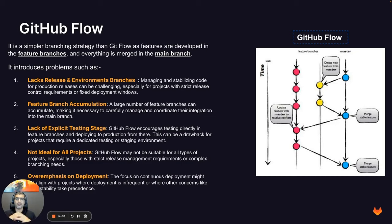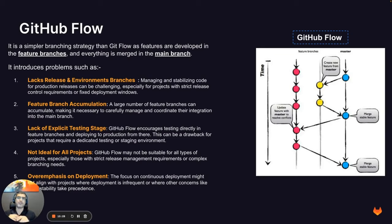The third challenge is the lack of an explicit testing stage. GitHub Flow encourages testing directly in feature branches and deploying to production once merged into the main branch. This can be a drawback for projects that require a dedicated testing or staging environment. Most organizations have testing and staging environments. With GitHub Flow everything deploys directly from the main branch into production, which is not ideal. None of us wants to discover something is wrong with our code only after it's been integrated and deployed to production.